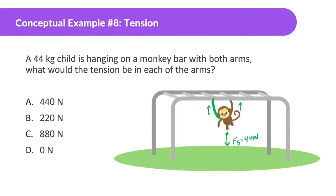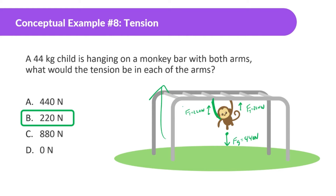They have to cancel out since it's not accelerating. There's going to be a force of tension of 220 newtons in each arm. If it was 440 on both, that means the monkey would be going up — but that's not what he's doing. He's just hanging.